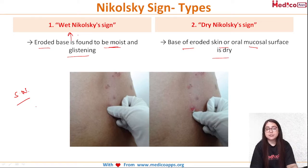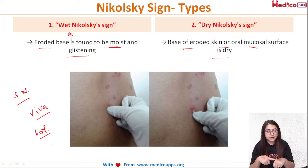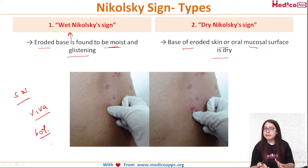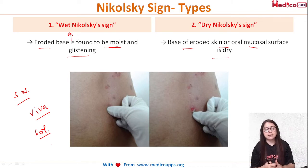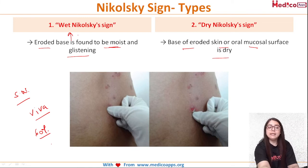To summarize: Nikolski sign is highly important for viva — examiners ask this from about 60% of students. Whenever tangential pressure is applied on normal-appearing skin around the lesion, the skin tends to slip off and a new lesion forms. Types include marginal, direct, wet, and dry Nikolski sign. It is seen in pemphigus and epidermolysis bullosa, with pemphigus being the most commonly expected answer.